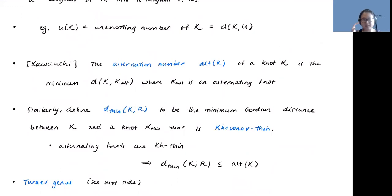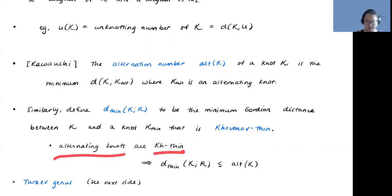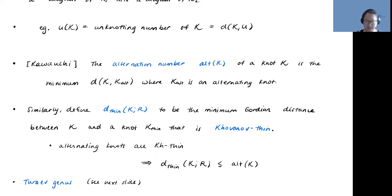We can define alternation number: if you think about the set of all alternating knots, you can ask what is the minimum Gordian distance between a knot K and this whole set of alternating knots. In our Khovanov study, we replace the notion of alternating knots with something bigger—the Khovanov thin knots. Since alternating knots are Khovanov thin, measuring the distance between any knot and the set of Khovanov thin knots gives a lower bound on the alternation number, because the alternating knots are contained within the Khovanov thin knots.